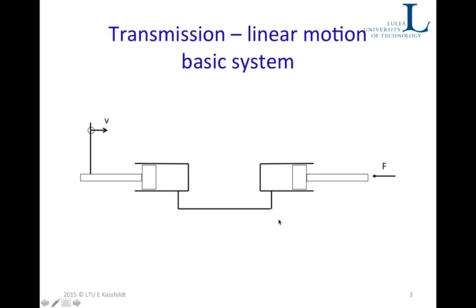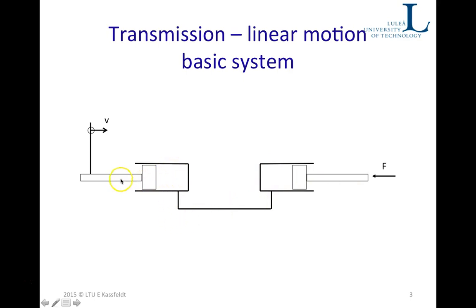This is the basic system that we have discussed earlier — a very simple system, but still you can find it in practical applications. You can think about where you can find a system like this, where you start moving this piston to the right. The oil from this chamber is pushed over to this chamber and this piston starts to move to the right. As soon as we have an external load opposite this direction, we will have a pressure built up in both cylinders and we have to apply an external force here if we want to continue the motion.